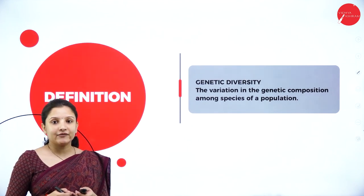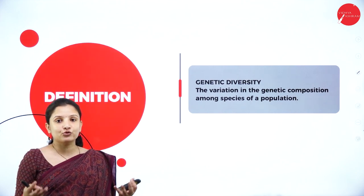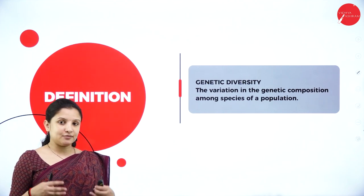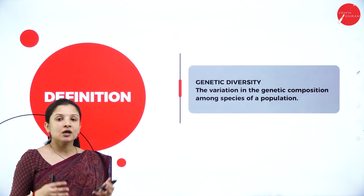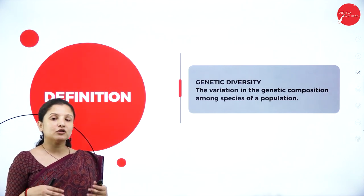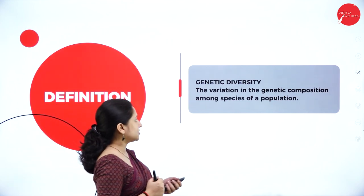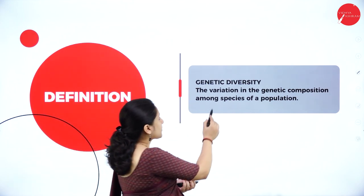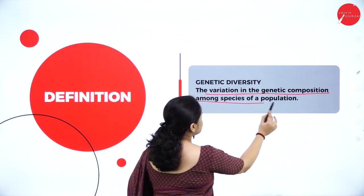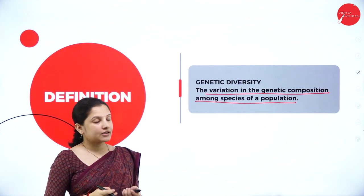Talking about genetic diversity — the name itself suggests it has something to do with genes. The diversity of organisms found on this planet because of the alteration in genes in them, or because of different sets of genes present in them, we call it genetic diversity. The variation in the genetic composition among species of a population is defined as genetic diversity.